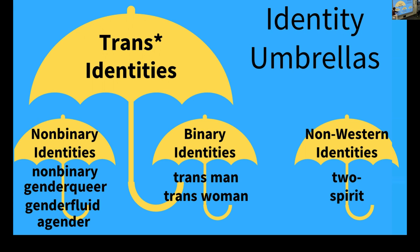Non-binary identities include genderfluid, genderqueer, agender, polygender, and flex gender. In the mid-2000s there was a big explosion of micro-labels where people tried to find words to define their individual experience. Non-binary people often have individual experiences of gender that don't fit the normative umbrella of male or female, so they want to create words that fit how they feel and what their relationship is to their gender.